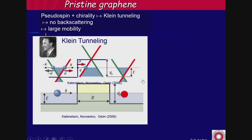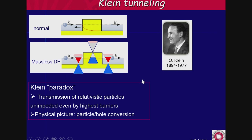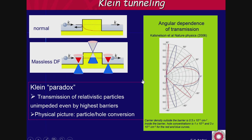The Klein tunneling is not a paradox — it has to do with the conduction and valence bands touching. The consequences: we cannot have electrostatic confinement. We cannot use electric fields to do anything to electrons in graphene — they do whatever they want. You can't make quantum dots, you can't switch them, make transistors, or guide them with electric fields. However, backscattering is absent but side scattering can occur. The transmission probability as a function of angle of incidence is exactly one at normal incidence, but at other angles it depends on the energy and density of carriers, with regions of almost no transmission.